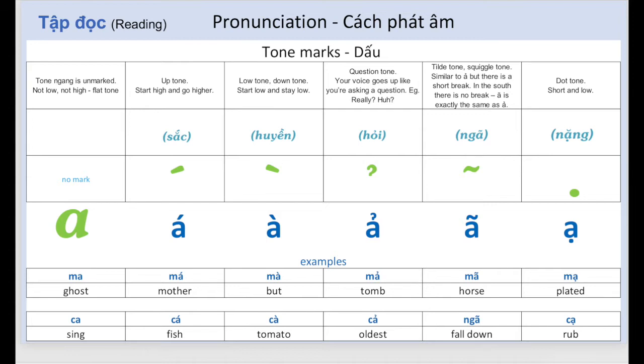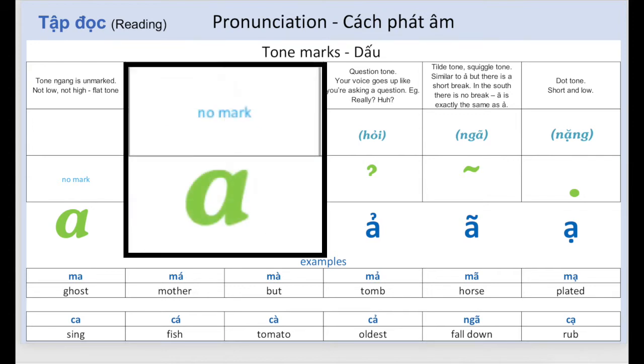The first is a flat tone with no mark, not low, not high. A. A. Examples: Ma, Ka.